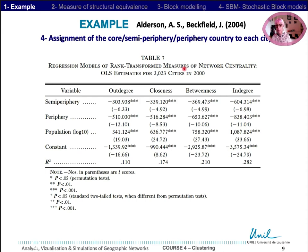However, the interpretation is the same as a classical regression. They did not include the core here, as it is represented by cities that are neither semi-periphery nor periphery. The research shows that population matters a great deal and large cities have more power and prestige. In combination, the position as core, semi-periphery, and periphery creates additional differentiation.